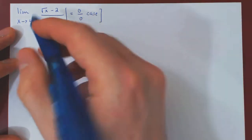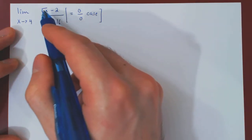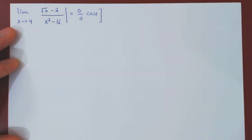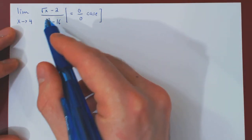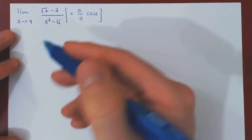As we have a difference here involving the square root, we can use the method of conjugation, and we will also factor this difference of squares.